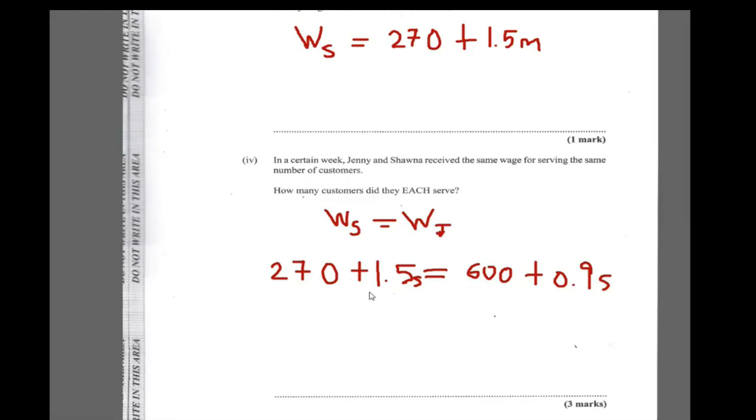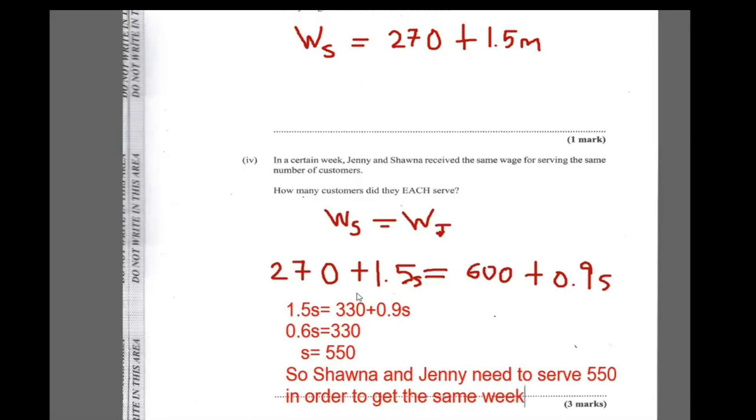So solving for S, we subtract $270 from both sides first to get 1.5S is equal to $600 minus $270 is $330 plus 0.9S. And then we subtract 0.9S from both sides to get 0.6S is equal to $330. And then we divide by 0.6 to get S is equal to $330 divided by 0.6, which is 550. So Shauna and Jenny need to serve 550 people in order to get the same weekly wage.